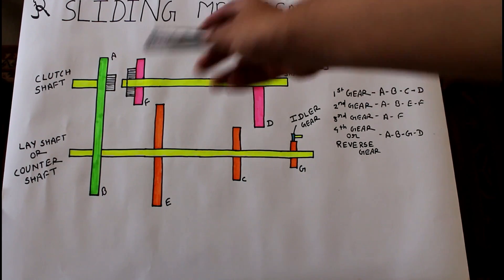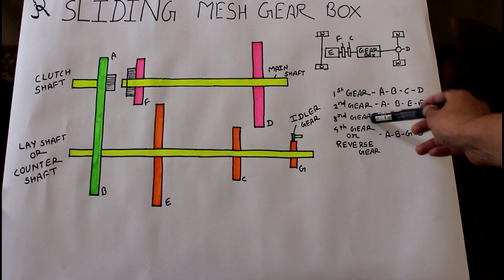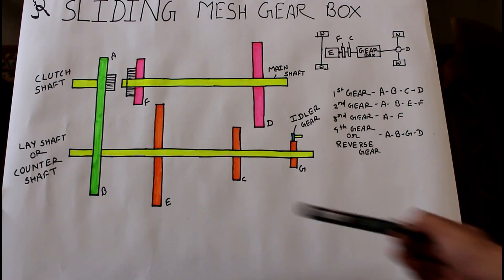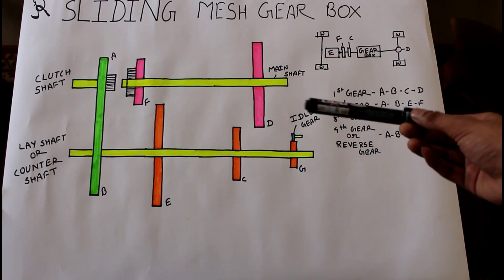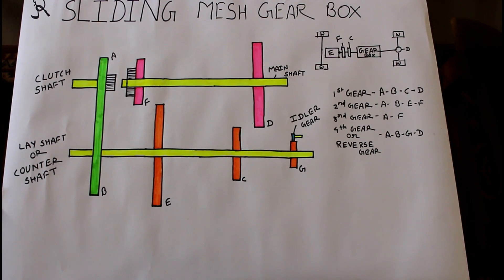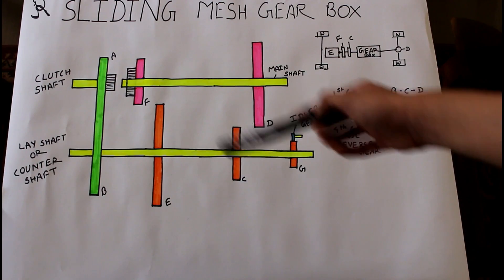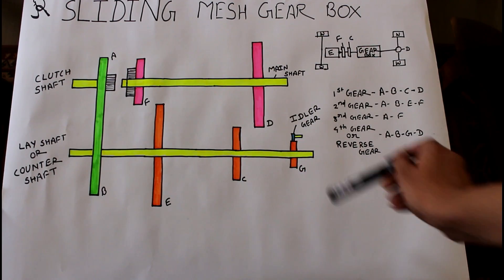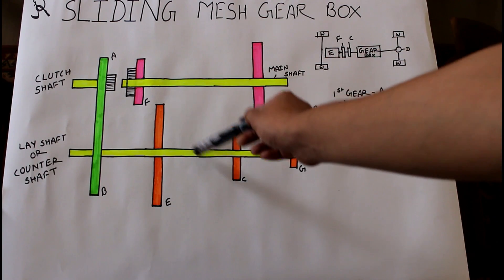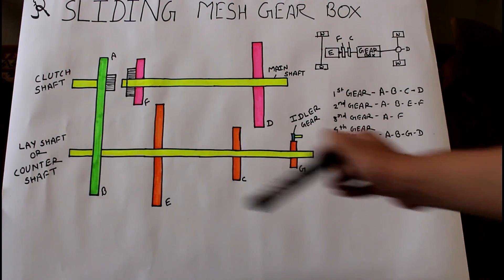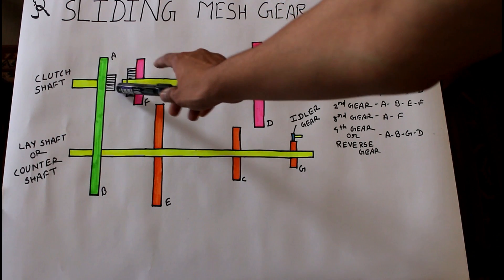In the sliding mesh gearbox shown here, there are three gears through which our vehicle can move forward, and a fourth one — the reverse gear — through which our vehicle can move backward. Looking at the construction of this gearbox, there are basically three shafts present: the first is the clutch shaft, the second is the main shaft, and the third is the layshaft or countershaft.